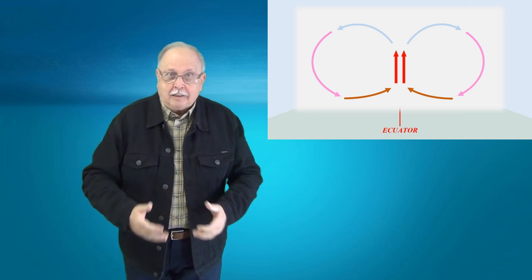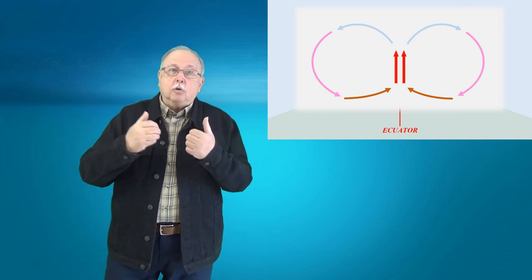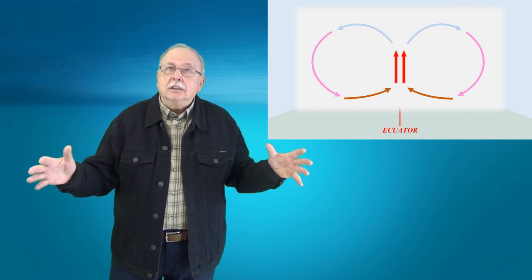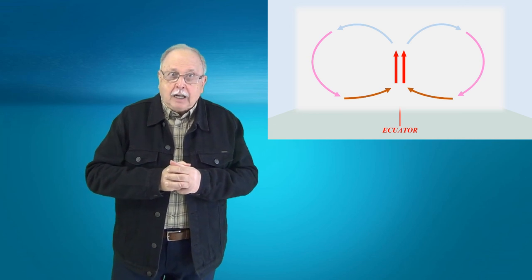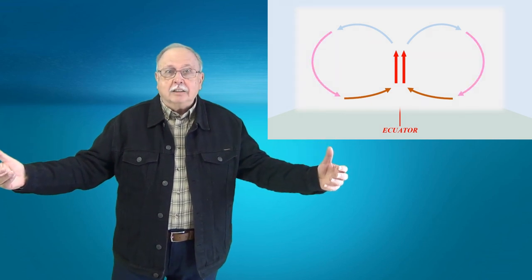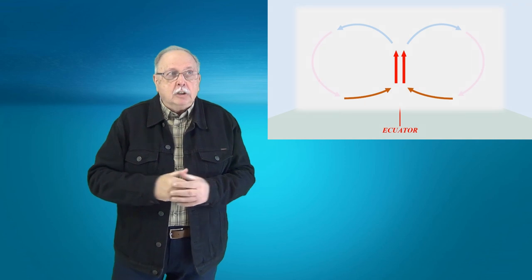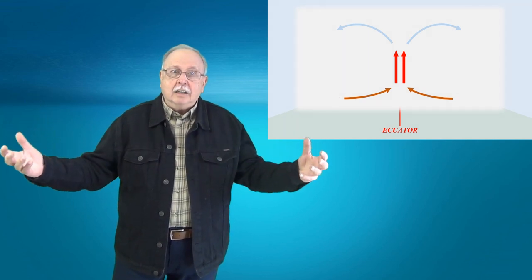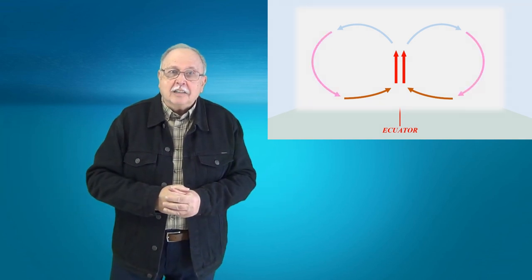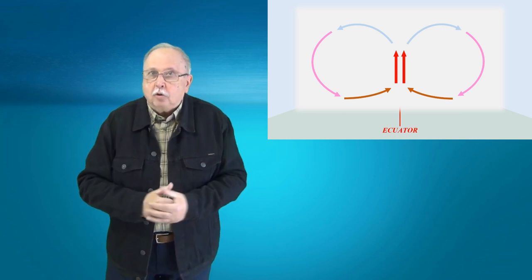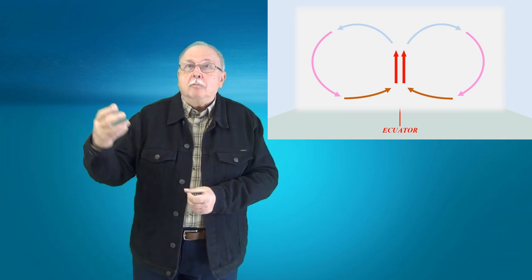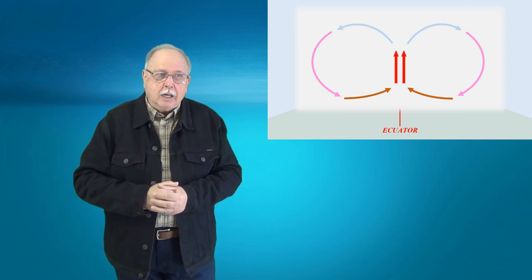Dar aerul cald, care se ridică, se răcește și vaporii de apă din el condensează, așa că apar ploi în zona ecuatorului și din apropierea acestuia. Când aerul din care au condensat vaporii de apă începe să coboare, el este deja uscat, nu mai conține aproape deloc vapori și mai mult începe să se încălzească deoarece se apropie de sol. Deci nu mai are cum să se producă fenomenul de condensare. O dată pentru că nu prea mai are ce să condenseze